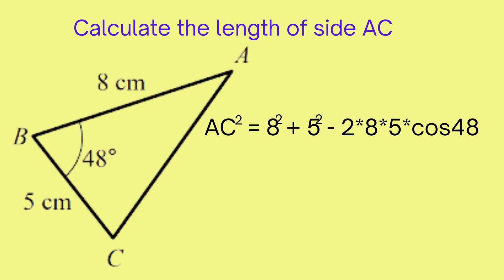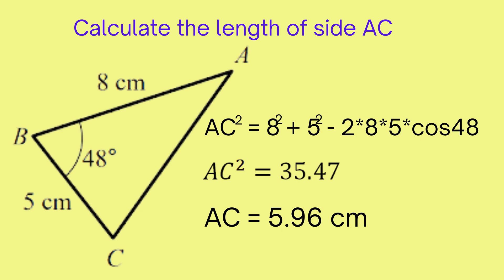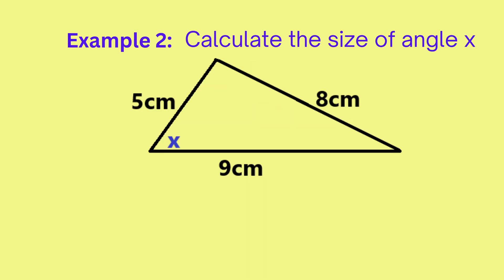Everything on the right can be entered into the calculator at once, giving us AC squared equals 35.47. That means AC is the square root of 35.47, hence our solution is AC equals 5.96 centimeters. In this next problem we want to find the unknown angle x.